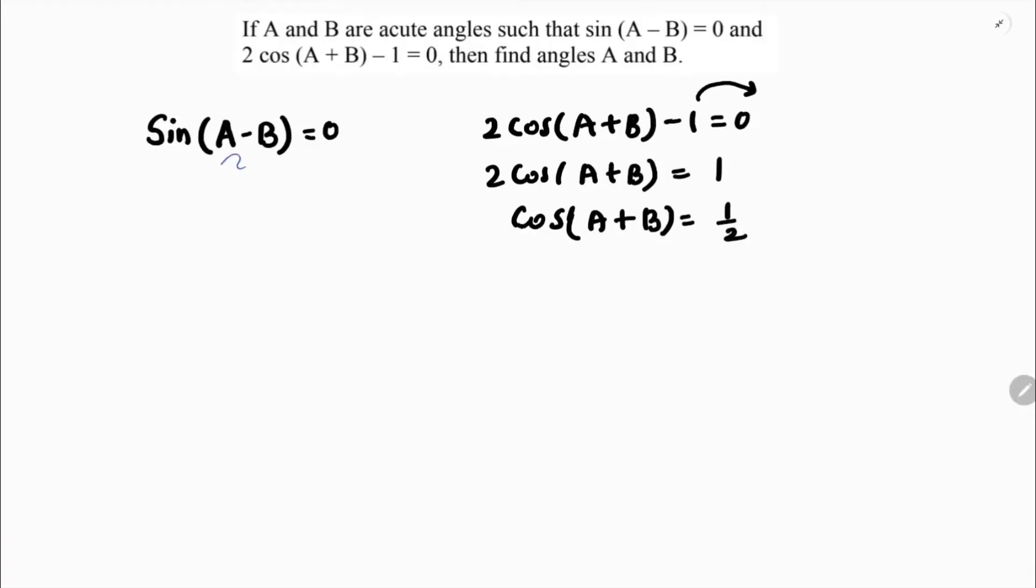Whenever you will get values like A-B or A+B, the values will be standard. Standard in the sense you will get from the table standard degrees like 0, 30, 45, 60, and 90.